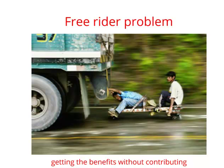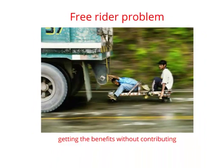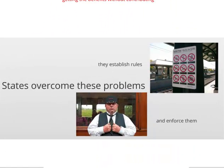A free rider gets the benefits without paying the cost — getting where they want to go without paying. In terms of the state, we think of this as getting public goods without paying taxes, though this is a very diverse problem that applies in everyday life in many ways. The state overcomes free rider problems by making rules: you have to pay taxes, you cannot pollute. That's how the state provides public goods, and going back to Weber's definition, the state uses coercion — so if you try to ride free on a train, you face a fine.